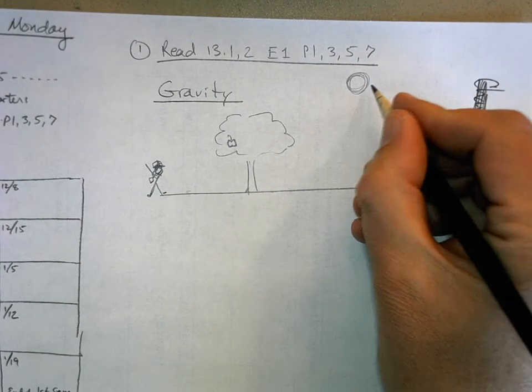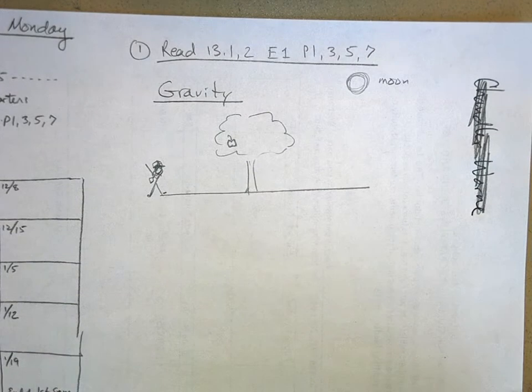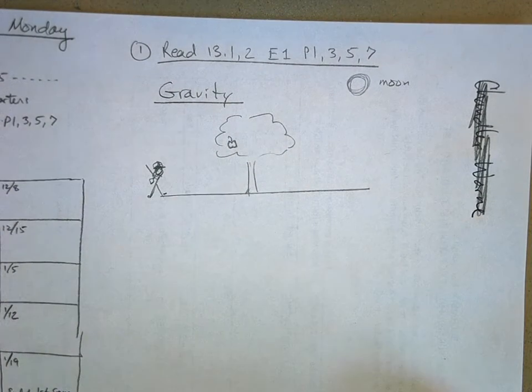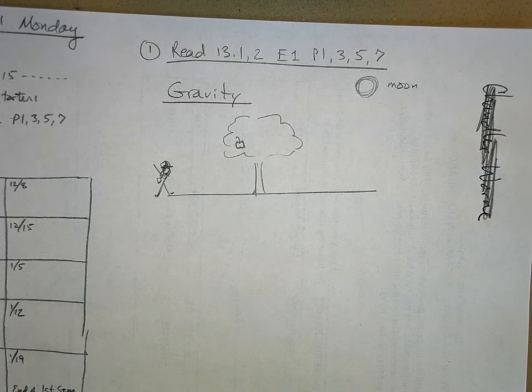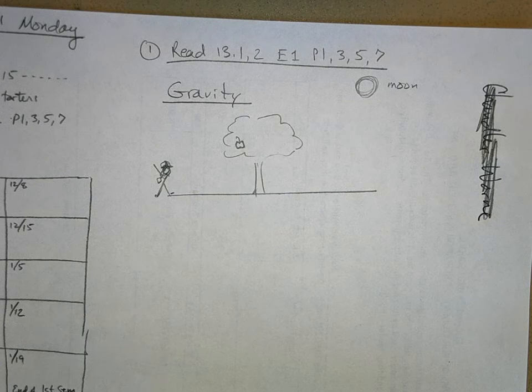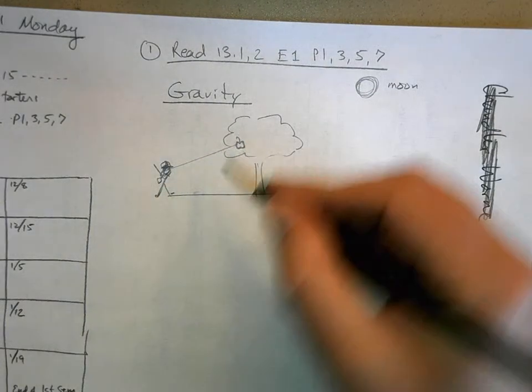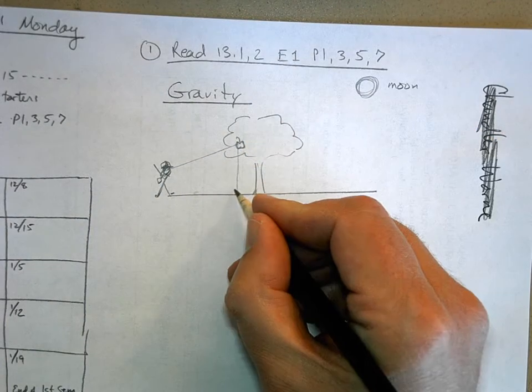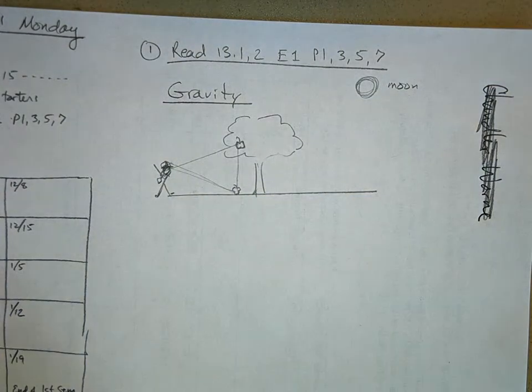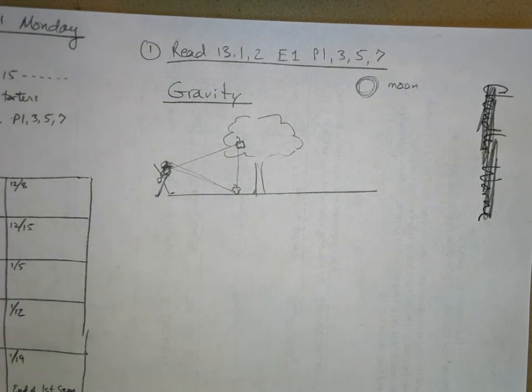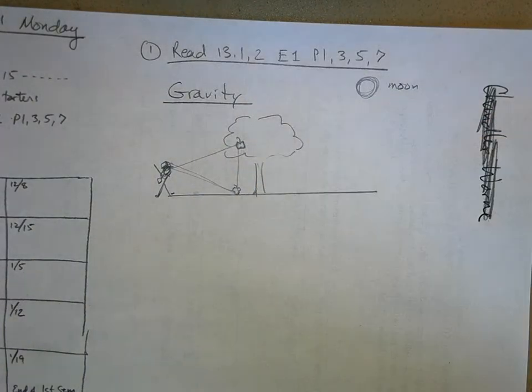So Isaac Newton, well I mean he didn't discover gravity, people knew things fell. They knew that apples fell from trees for a long time. But here's what he did: he looked at this apple and the apple fell from the tree and got a bruise. So we saw that, but then as far as I know Newton is the first human being to ever make the connection between an apple falling from the tree and the moon being in orbit around the earth.